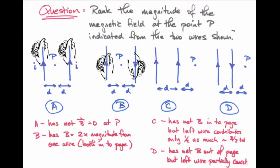The left-hand wire has a magnetic field that points into the page, so it wants to cancel the magnetic field from the right-hand wire, but it is weaker because it's further away.